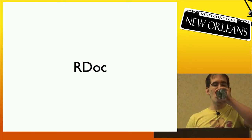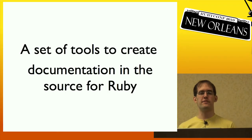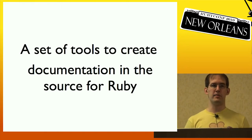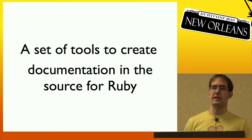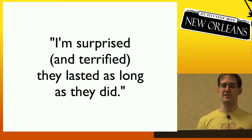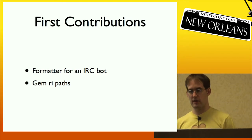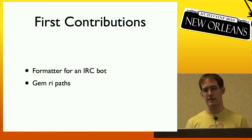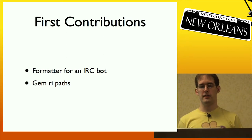Now on to RDoc. RDoc was originally written by Dave Thomas. Dave Thomas wanted a set of tools to create documentation in the source for Ruby and for Ruby projects. I think he absolutely succeeded with this because pretty much every project has at least some documentation in RDoc format. But when I asked him, he said: 'I am surprised and terrified that RDoc lasted as long as it did.' My first contribution to RDoc was an RI output formatter for an IRC bot, so you can look up RI data with an IRC bot. And I also added a gem RI path so that the RI tool can look up RI data for gems.